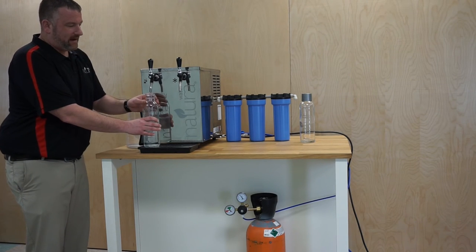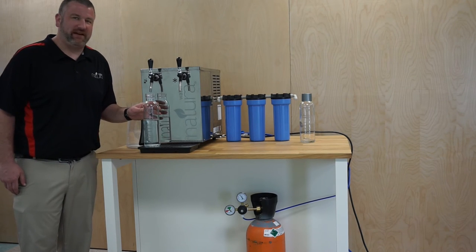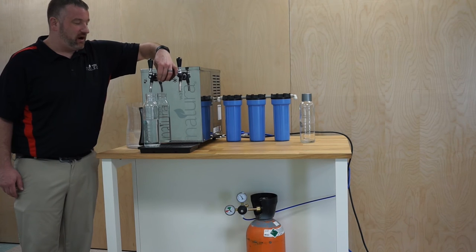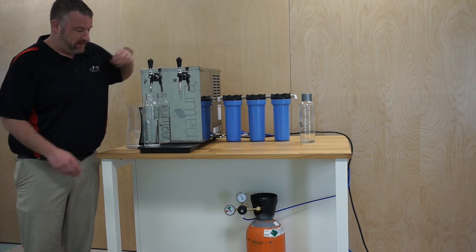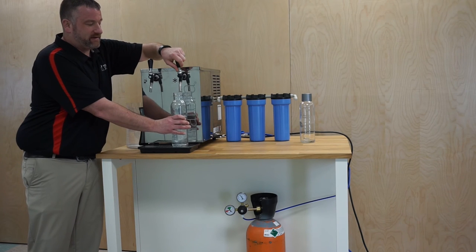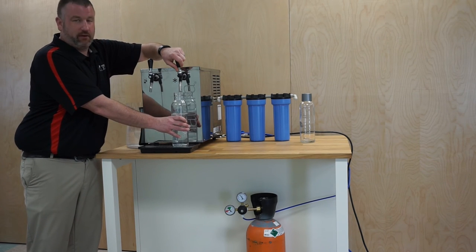The idea is to make sure that you fill up a liter bottle in 15 seconds on the sparkling water. To do that, you just adjust the condensator on the side of the tap, and then you dispense your sparkling water. Then you go over to your cold water and dispense cold water to make sure that you're getting water out.